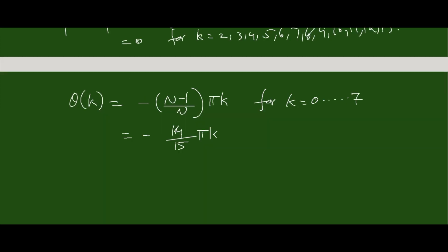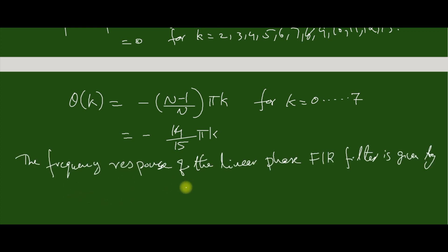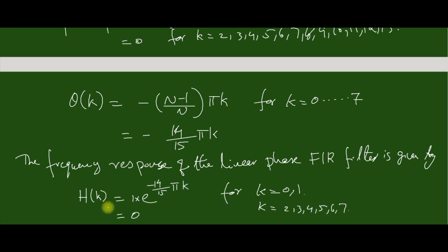With the magnitude and phase established, the frequency response of the linear phase FIR filter is given by H(k) equal to 1 times e raised to minus (14/15) pi k, for k equal to 0 and 1, considering only the first half of the data which is sufficient to compute h(n). H(k) equals 0 for k equal to 2 through 7. Now by taking the inverse DFT of H(k) we can determine h(n).